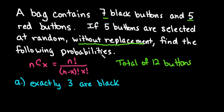So if you're selecting without replacement, on the next draw you have 11, then 10, then 9, then 8, so your probability changes each time. This would not be a binomial distribution since it's without replacement. Had it said with replacement, then it would have been binomial because the probability of success would remain constant throughout.